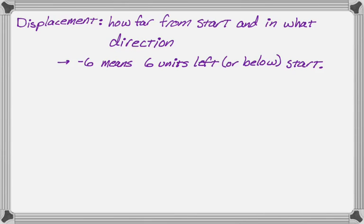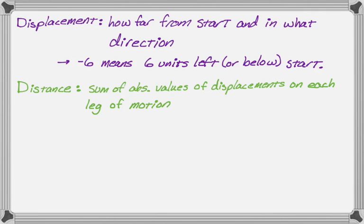We also need to define distance, which has a little more going on. Distance is the sum of the absolute values of the displacements on each leg of motion. So if we have something that's moving back and forth along a straight line — sometimes moving forward, sometimes moving back — ultimately it will stop. What we want to do is add up all the absolute values of the displacement while it's moving.